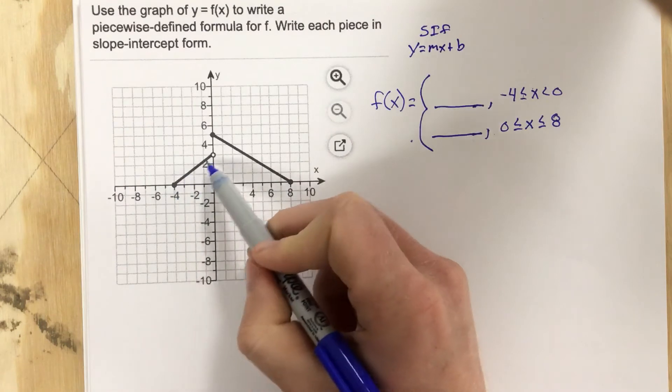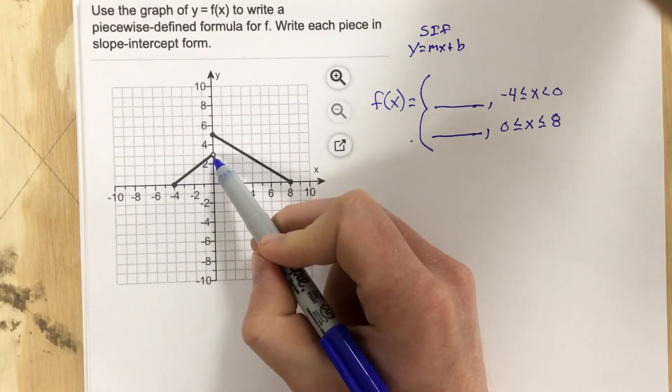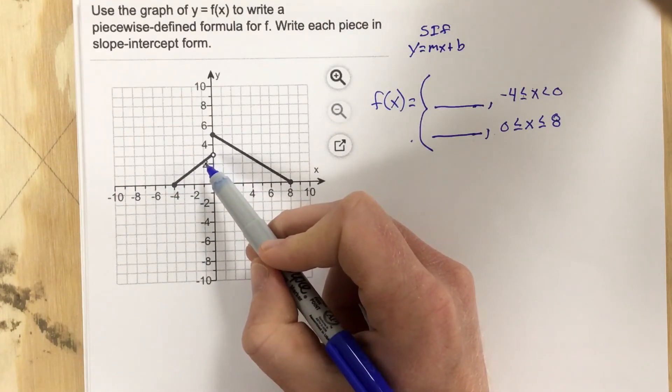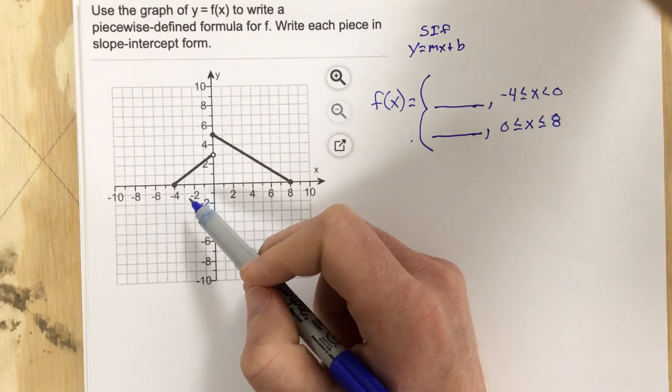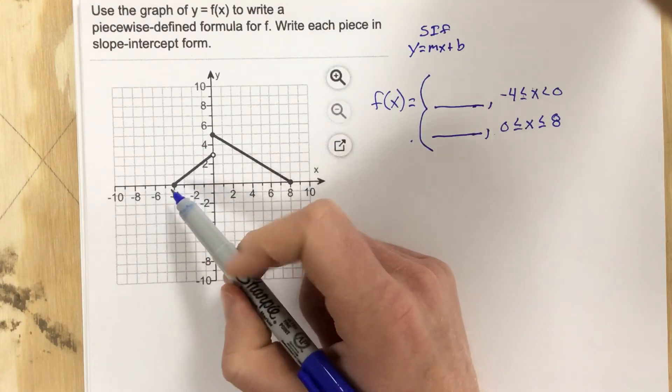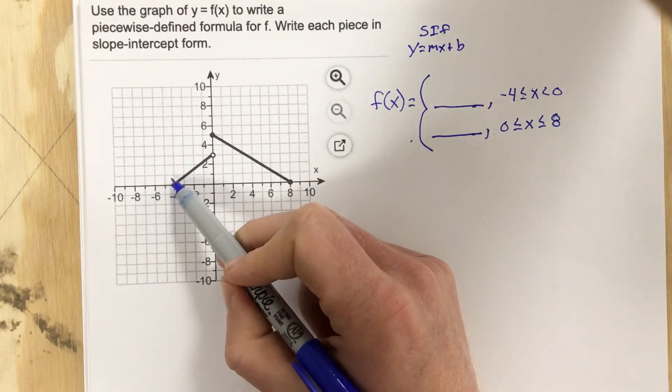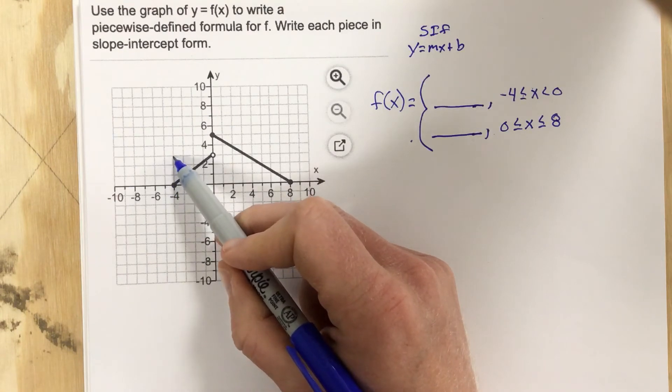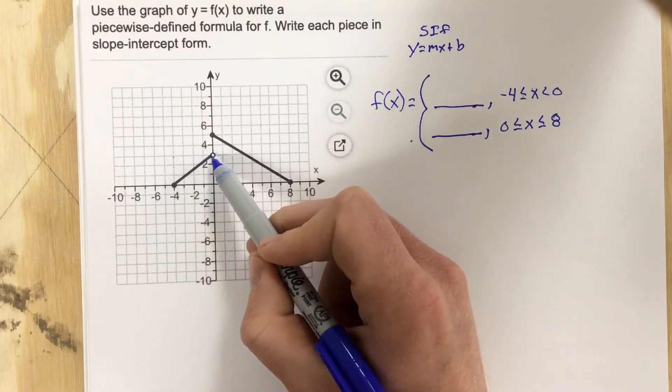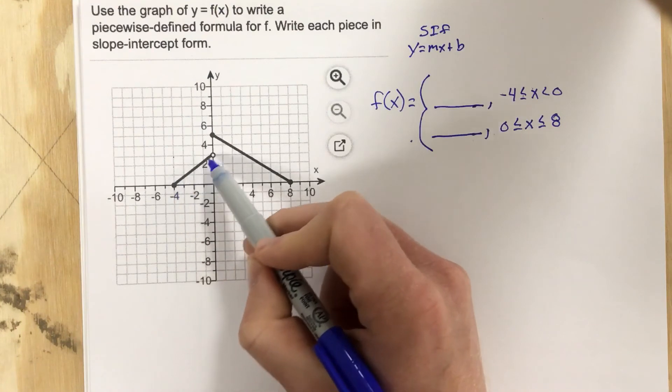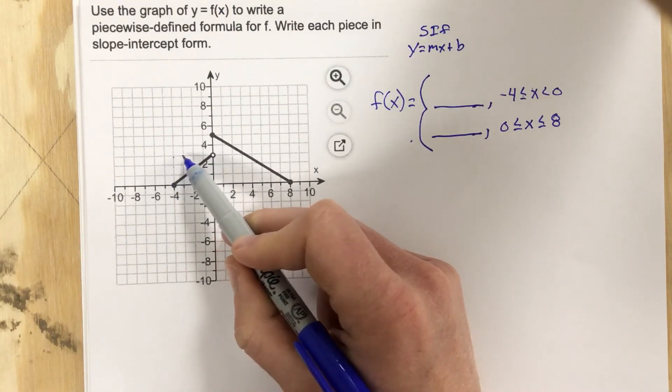I can either take the two coordinates and find the slope using y2 minus y1 over x2 minus x1, the slope formula, or I can just count. So I'm going to go up one, two, three, over one, two, three, four. So my slope is, first of all, it's positive. I identify that it's positive, and I get three over four.